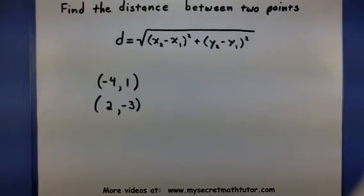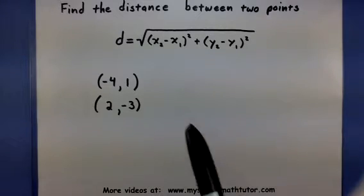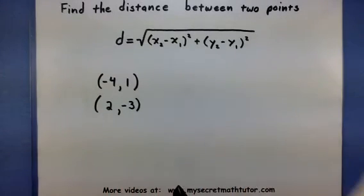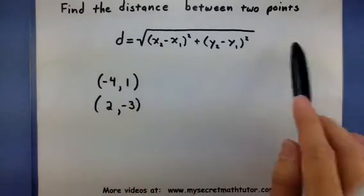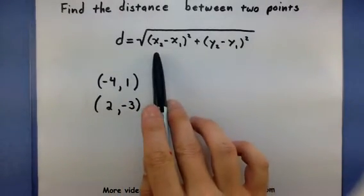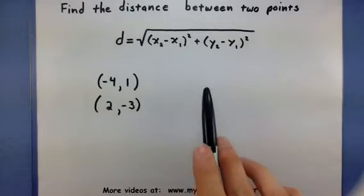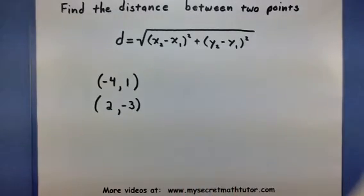In this video, we are going to find the distance between two points using the distance formula. This formula that I have written down is the distance formula. The distance is equal to the square root of x2 minus x1 squared plus y2 minus y1 squared.